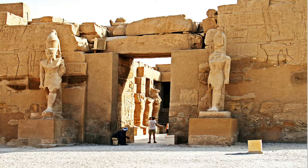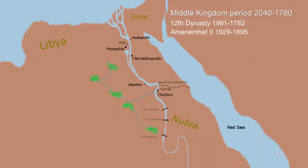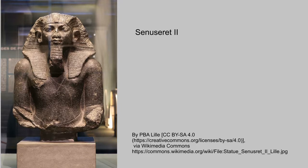Senusret the First's son Amenemhat the Second began to trade with the Minoans, the Mycenaeans, Lebanon, and Byblos — this is Mediterranean Sea trade. He also dredged the canal that goes from the Nile River to the Fayum, which is like a lake just beside the Nile River just south of Memphis connected by a canal, allowing them to control irrigation to the entire area's farmland. Amenemhat the Second's son Senusret the Second continued the project of dredging the canal to the Fayum.